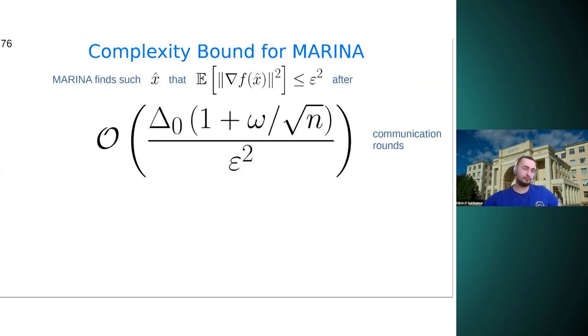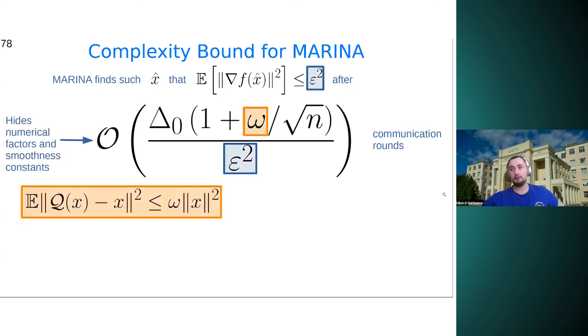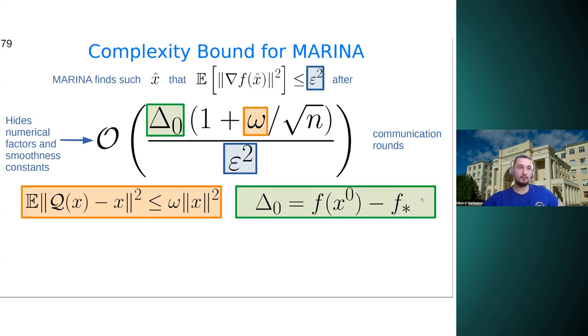And actually, using lower bounds for derivative-free optimization, one can show that dependence on omega is also optimal here. Because rand-K operator can be considered as, for k equals 1, it can be considered as randomized coordinate descent type of methods. And so it is close to zero-order methods. And so one can establish a lower bound. The resulting complexity should depend on the dimension, should depend on the dimension linearly.